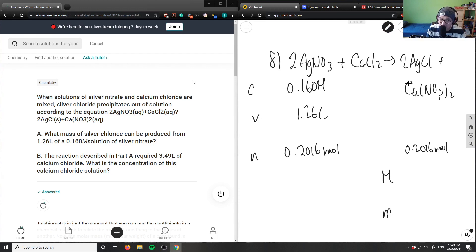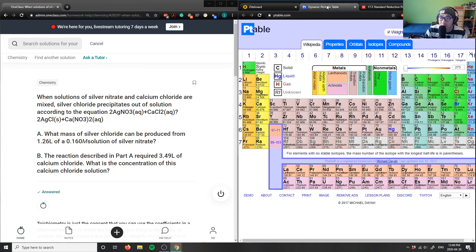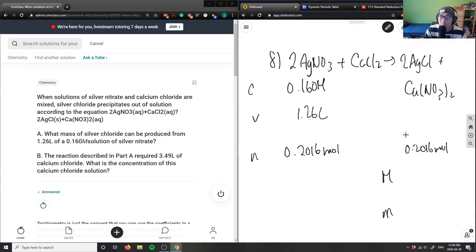So I need molar mass and my mass here. So silver chloride, silver I have Ag here which is 107.87, so I have 107.87 plus chloride we know is 35.45, which will give me a total molar mass of 107.87 plus 35.45, which gives you a total molar mass of 143.32 grams per mole.